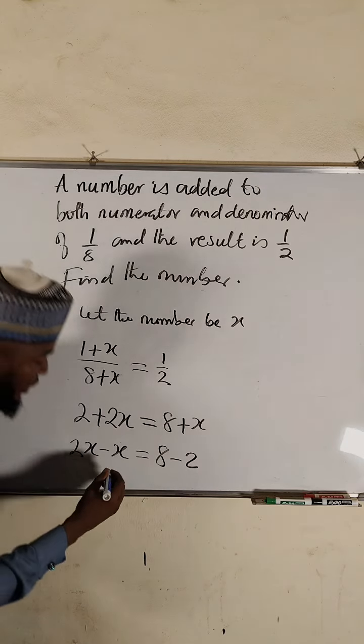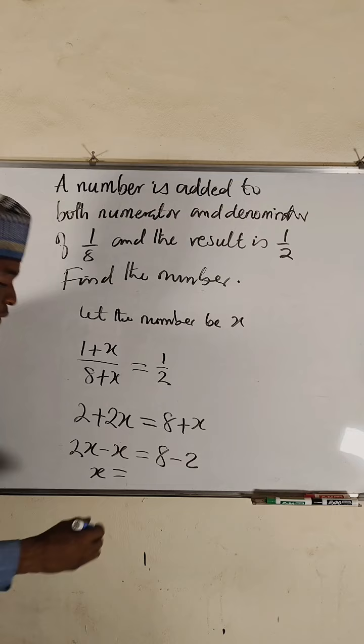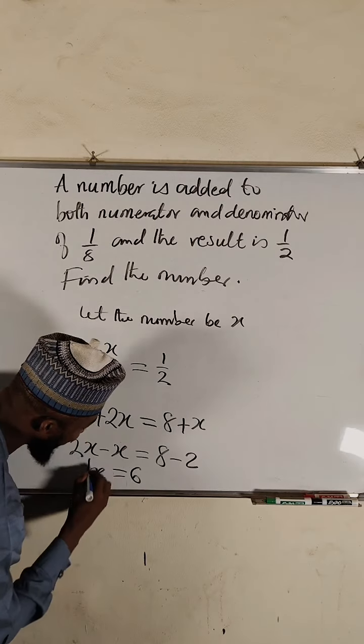We have eight already to the other side. As two crosses over it becomes negative. So you can see that two x minus x will give us a single x. Eight minus two will give us six.